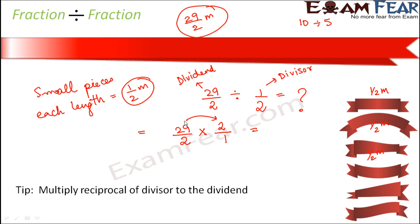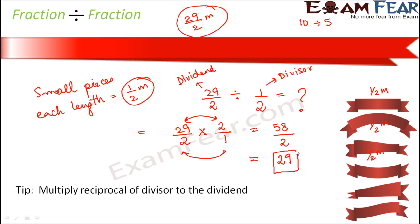Now it is simple multiplication: 29 into 2 over 2 into 1, which gives 58 by 2. When you divide 58 by 2 you get 29. So you will get 29 pieces of ribbon when you cut this big ribbon. This is how you divide a fraction by a fraction.